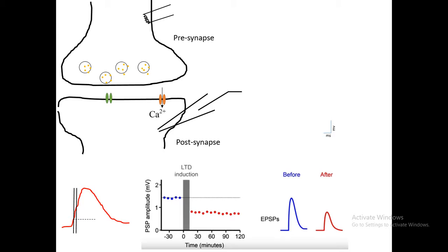Long-term depression could be evoked by a protocol in a cultured slice system. People can excite the presynaptic terminal and record from the postsynaptic terminal. If they give a presynaptic current injection, they get a postsynaptic potential known as EPSP.